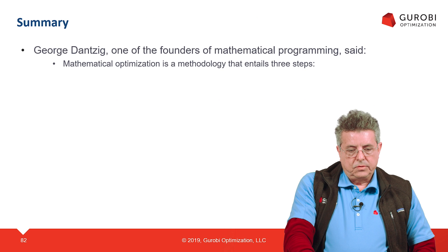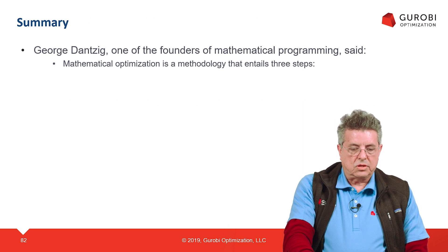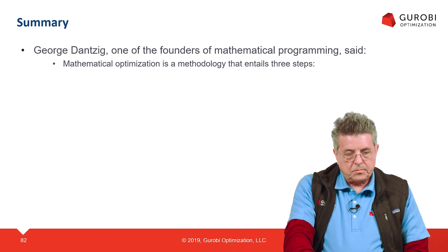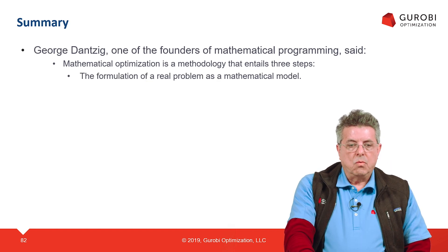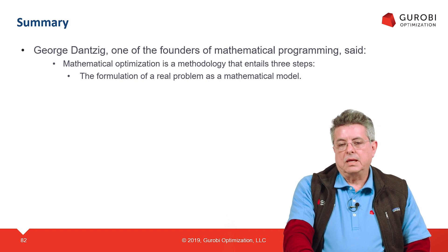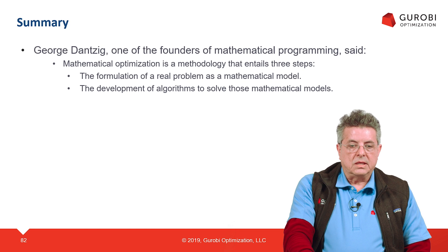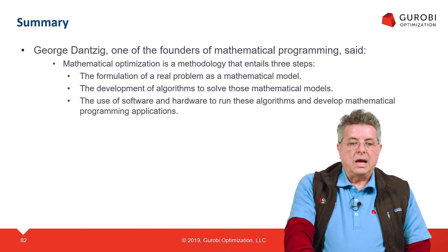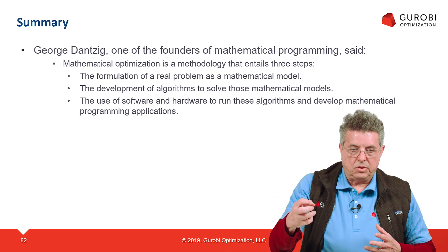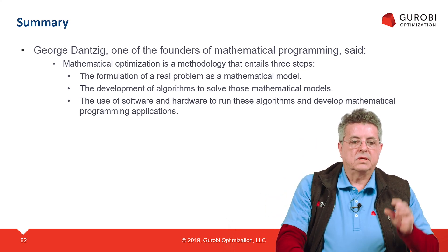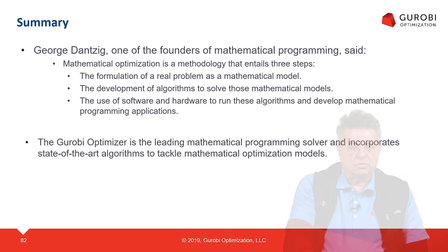To summarize, and using the words of George Dantzig — the father of mathematical programming — mathematical optimization is a methodology that entails three steps: formulation of a real problem as a mathematical model, development of algorithms to solve those mathematical models, and developing applications using the formulation and algorithms with software and hardware. The GoodOvi optimizer is the leading mathematical programming solver and incorporates state-of-the-art algorithms to tackle MIP problems.